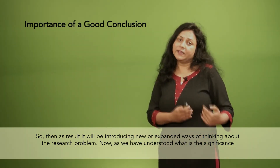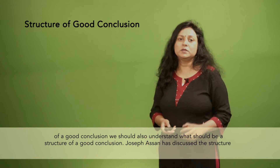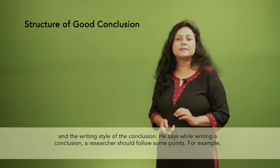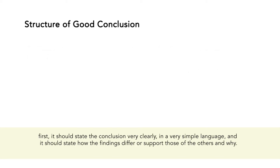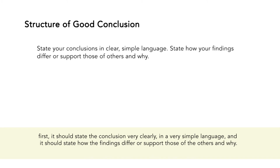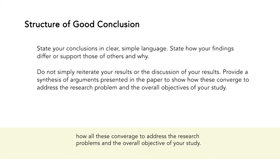As we have understood the significance of a good conclusion, we should also understand what should be the structure of a good conclusion. Joseph Hassan has discussed the structure and writing style of the conclusion. He says that while writing a conclusion, a researcher should follow some points. First, it should state the conclusion very clearly in simple language and should state how the findings differ from or support those of others and why. It should not simply reiterate your results or discussion of results, but should provide a synthesis of arguments presented in the paper to show how all these converge to address the research problem and the overall objective of your study.